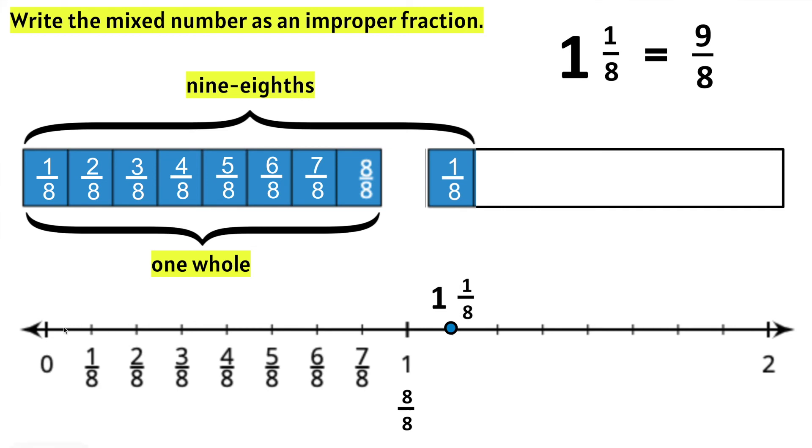Let's count how many eighths we have. 1/8, 2/8, 3/8, 4/8, 5/8, 6/8, 7/8, 8/8 which is 1 whole, and if we add another eighth we are at 9/8. So we know that 1 and 1/8 is the same thing or equal to 9/8.